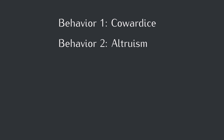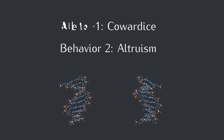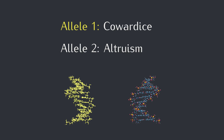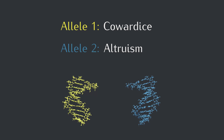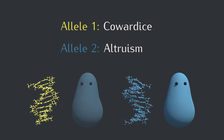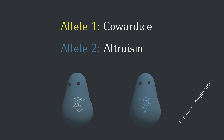The blob's behavior will be controlled by a gene, which has two versions or alleles. The cowardly allele will be yellow, and the altruism allele will be blue. It's worth saying that in real life, behavior is determined by a mind-numbingly complex interaction between many genes and a creature's environment over time, but this simple model is good enough to help us grasp some fundamental ideas.